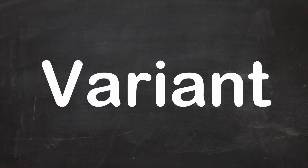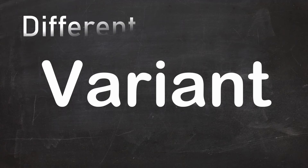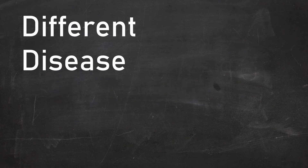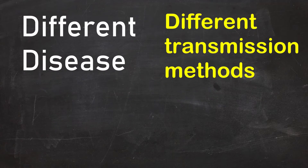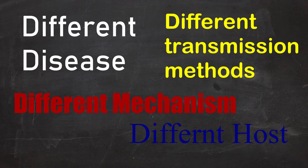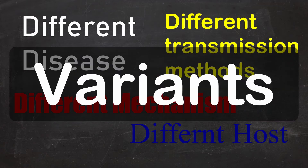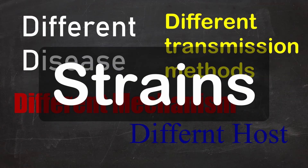The rest may be classified as variants, since there aren't enough mutations done to classify them as different strains. Once a variant becomes significantly different — with a different kind of disease, different transmission methods, different mechanism, different host — then it would be reasonable to classify that variant as a separate strain.